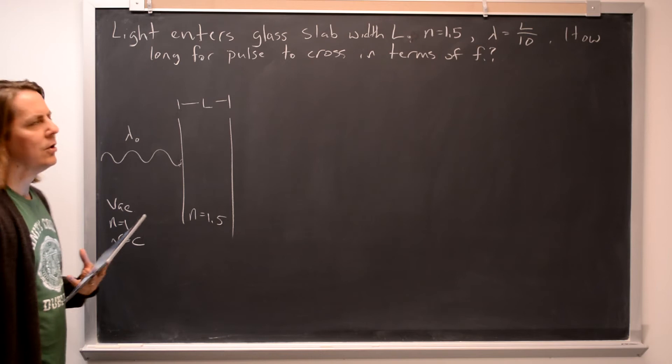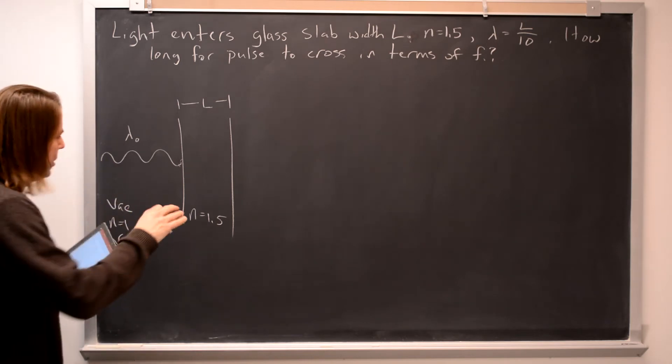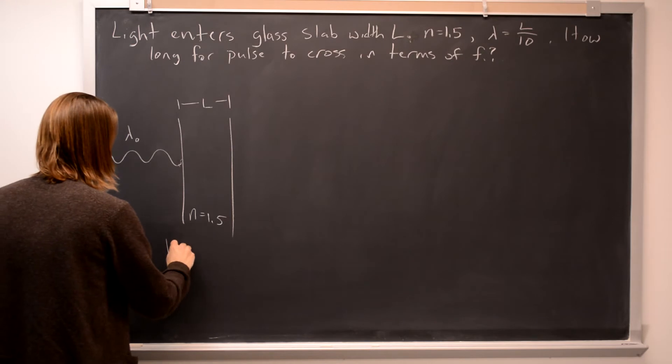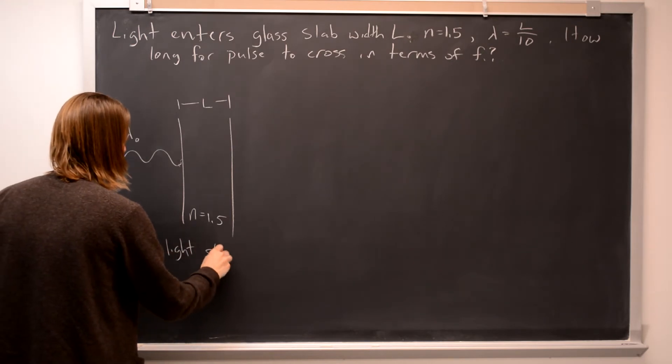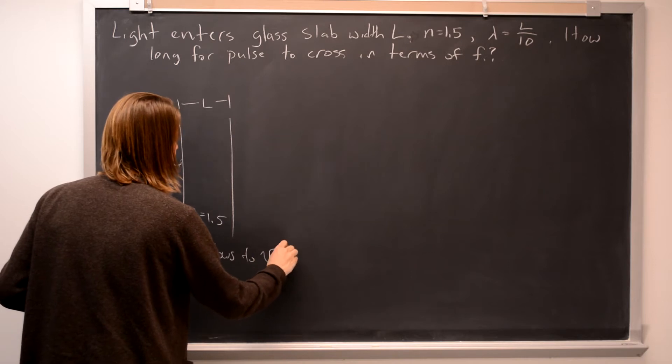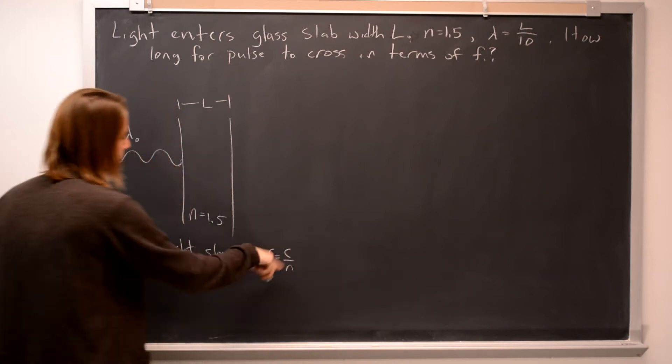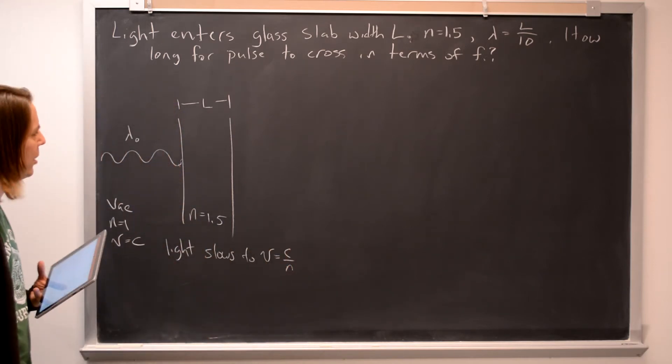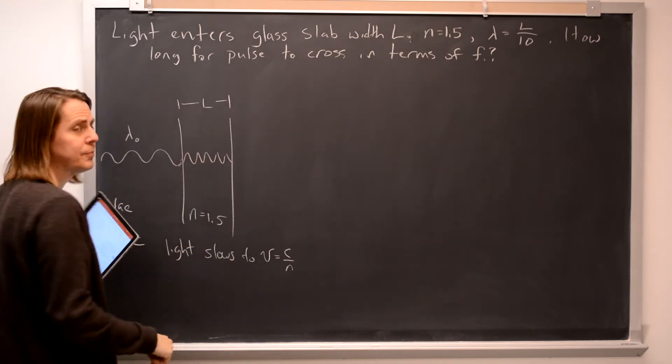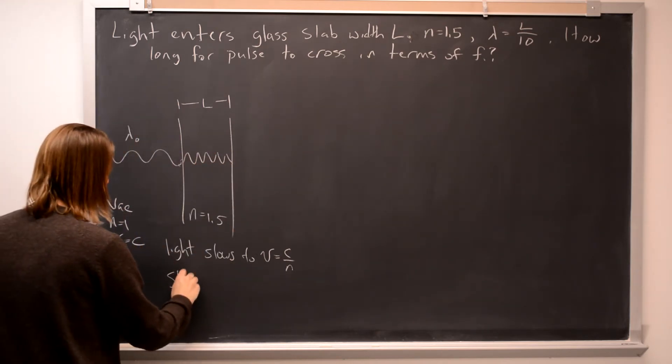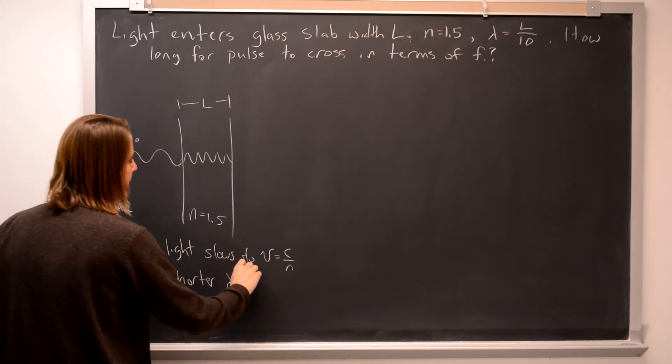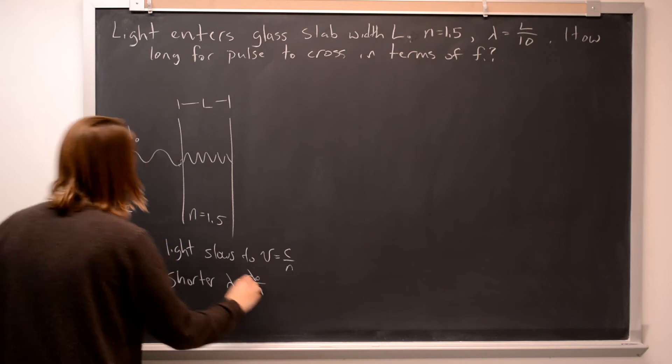So when light goes into the glass, we know the light slows down, slows to the speed of C over N. So it would be C over 1.5 in this problem. When it slows down, it actually gets a shorter wavelength. So shorter wavelength, and the wavelength goes down from lambda naught over N.